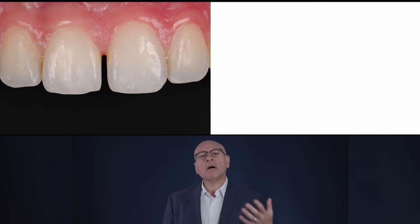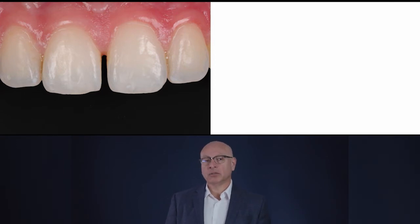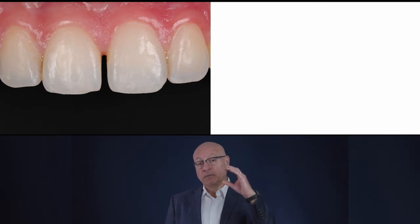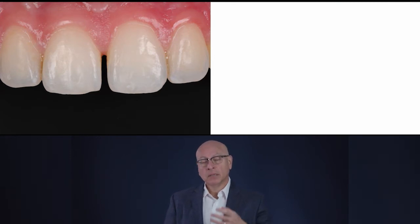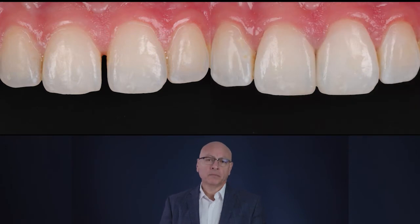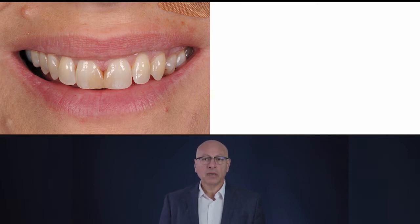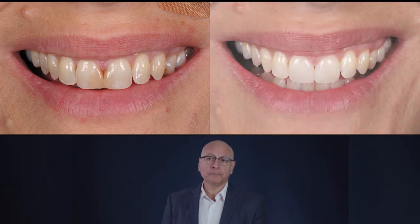Shape selection is only part of how you get to do really nice resin composite restorations. Shape selection being the first, cavity preparation being the second, your layering technique, and your polishing are things that are very important. But today we're going to talk about shape selection. This first case is a pre-op photo — it's a good case, both the patient and I were very happy. Let me show you a second case: this patient came to me with an old restoration she was unhappy with due to discoloration, so we changed the restoration.